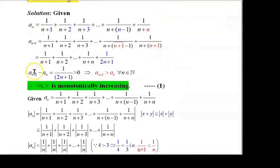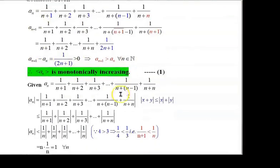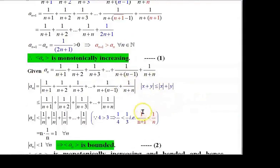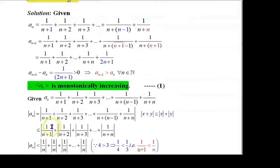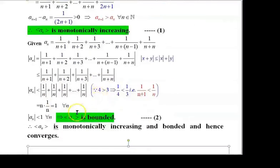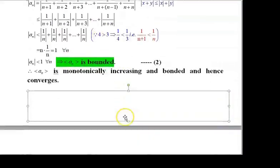By taking the difference between aₙ₊₁ and aₙ, we have shown that it is monotonically increasing. By taking modulus of aₙ and using the triangle inequality, and also using 1/(n+1) < 1/n, we have shown that it is bounded above by 1. Therefore, the given sequence is monotonically increasing and bounded above by 1, and hence it is convergent.